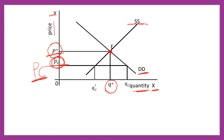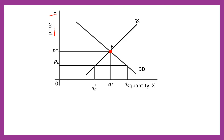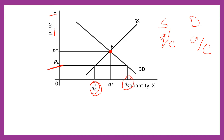If the government fixes a price ceiling at PC, which is lower than the equilibrium position, you can observe in the diagram that at price PC the quantity supplied is less, while the quantity demanded is QC. That means demand is greater than supply — demand is this much quantity, but supply is less than the quantity demanded.